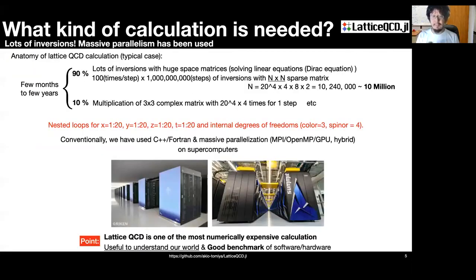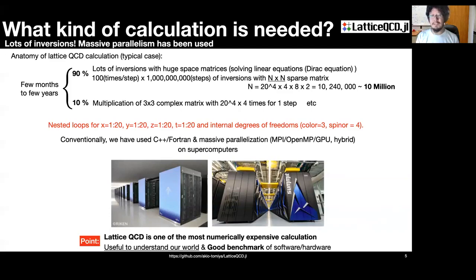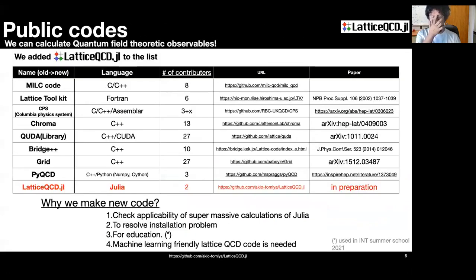Here I give typical numbers for a lattice QCD calculation. It is typically performed on a supercomputer and takes a few months to a few years. 90% of computing time is taken in inversion of a huge sparse matrix, which is typically more than 10 million by 10 million. The codes are typically written in C++ or Fortran with massive parallelization. An important point is that lattice QCD calculations are not only beneficial for understanding our world, but are actually a good benchmark for software and hardware because they require huge numerical resources. There are many public lattice QCD codes, and we added a new one to the list.